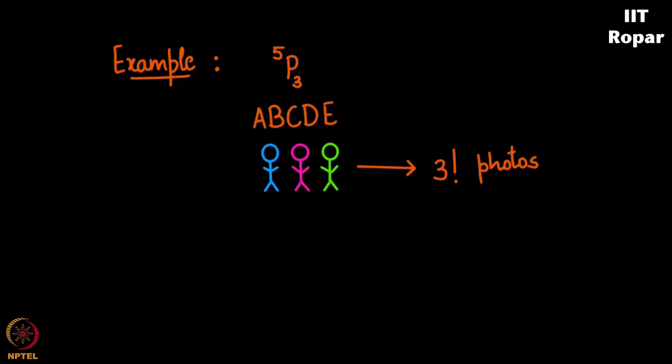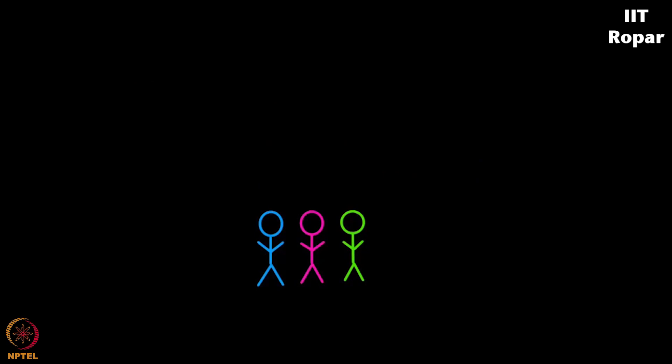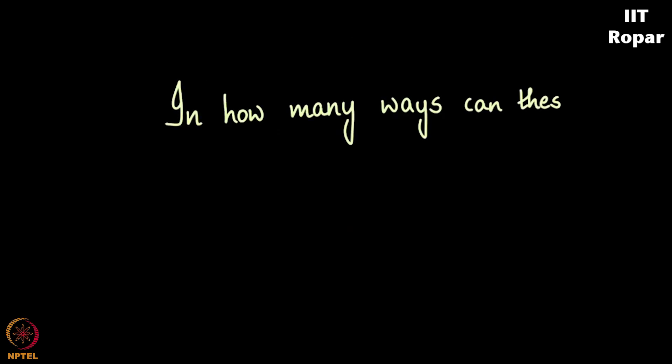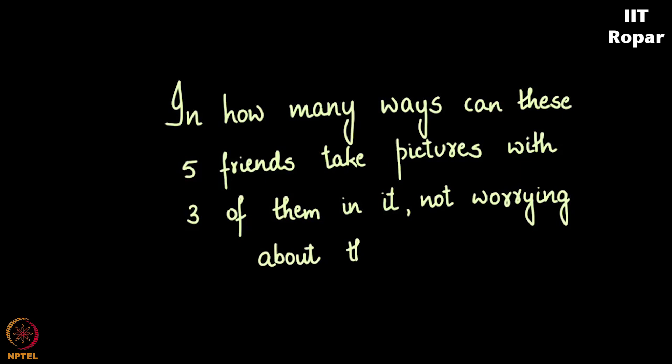The modification is that these three people once they come forward, of course two people go backward and three people come forward, and these three people can change their positions and take three factorial pictures. What if they decide that hey, come on, all three of us are in the picture, why does order matter? Let us take only one picture with three of us in it in some order. Then in how many ways can these five friends take pictures with three of them in it, not worrying much about all possible orders in which these three people can take pictures? They just stand in some order and click a picture. In how many ways can they click? Let us go ahead and enumerate it the way we did for the previous case.